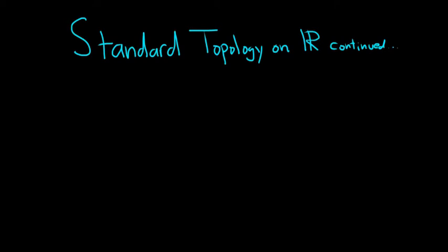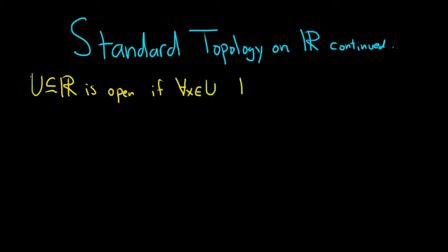Hi, YouTube. In this video, we're going to continue our discussion of what we're calling the standard topology on the set of real numbers. Recall that a subset of the real numbers, U, is said to be open in this topology if for every x in the set U, we can find some epsilon greater than 0 such that we have a neighborhood of x that is entirely contained in U. That's what it means for a set U to be open in the standard topology on R.